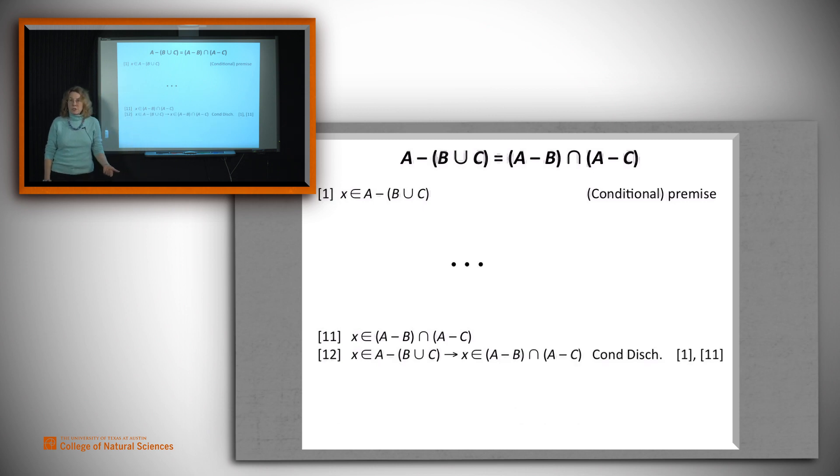We'll use conditional discharge to show that if X is in fact in the first set, it's in the second one. And then what we'd like to be able to do is to say, we know the other way also. I put this in green because we'll be able to say that if every step that we used in doing this is in fact reversible.